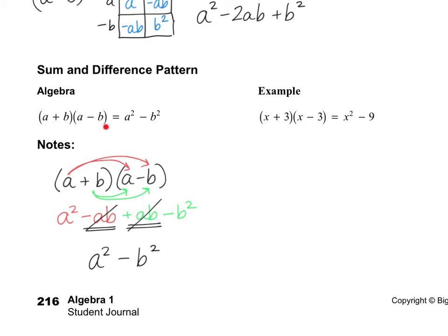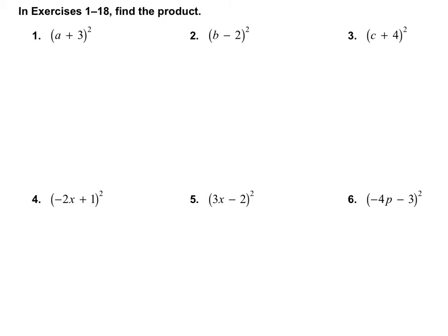If you know the trick, you can go straight from the question to the final answer. In numbers: if we have (x + 3)(x - 3), the final answer would be x squared minus 9. Multiplying the outer terms gives negative 3x, and the inner terms give positive 3x — they cancel, which is why the middle term disappears. Using the shortcut on a problem: take the first term and square it to get a squared, square the last term to get 3 squared, and the middle term is 2 times a times 3, giving 6a. Final answer: a squared plus 6a plus 9.